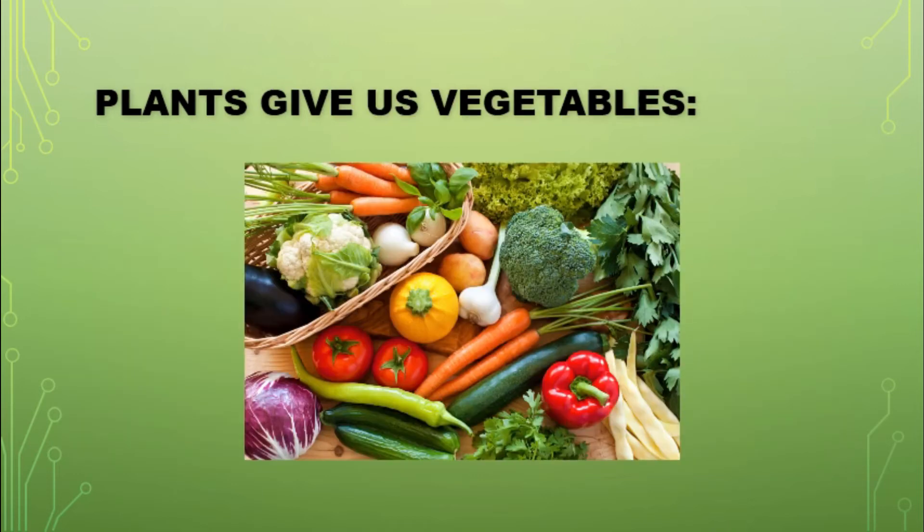We eat fresh and green vegetables. They are good for our health. Vegetables are eaten raw or cooked. We eat different parts of plants as vegetables. Plants give us vegetables.